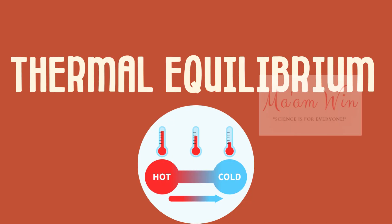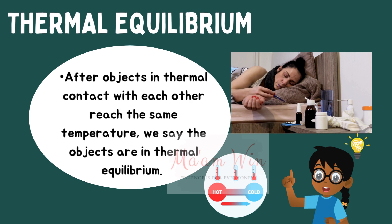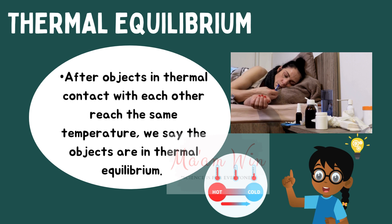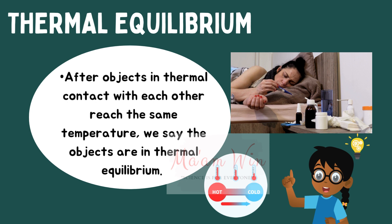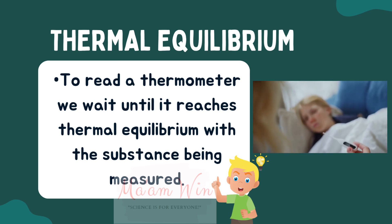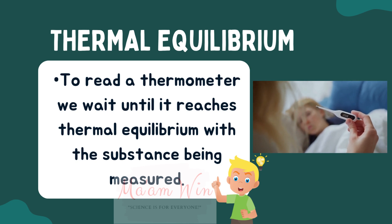Next topic will be about thermal equilibrium. After objects in thermal contact with each other reach the same temperature, we say the objects are in thermal equilibrium. When a thermometer is in contact with a substance, heat flows between them until they have the same temperature. Temperature is the indicator of thermal equilibrium in the sense that there is no net flow of heat between two systems in thermal contact that have the same temperature. To read the thermometer, we wait until it reaches thermal equilibrium with the substance being measured.